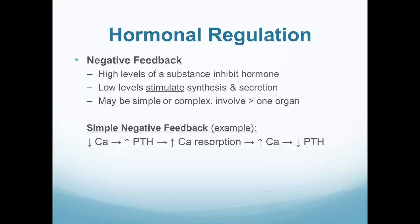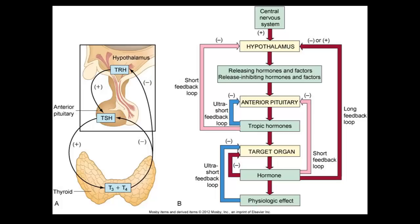Here's a simple negative feedback example on screen: a decreased calcium level stimulates release of parathyroid hormone, which causes increased calcium resorption. The increased calcium level then stimulates parathyroid hormone to decrease its stimulation because we now have adequate calcium - we don't want to keep stimulating parathyroid hormone otherwise we'll have too much calcium. The diagram also shows a long feedback, short feedback, and ultra-short feedback loop for the thyroid, with the hypothalamus making thyroid regulating hormone, the pituitary making TSH, and the thyroid making T3 and T4.